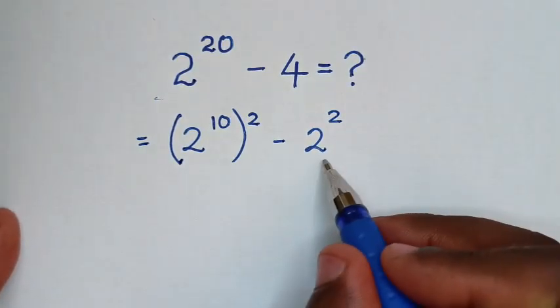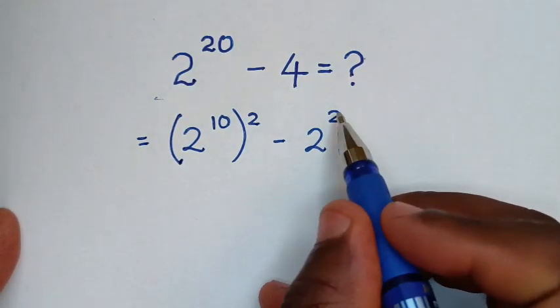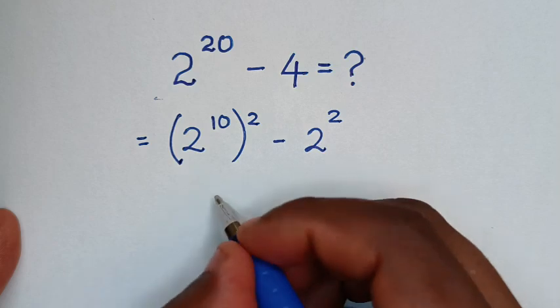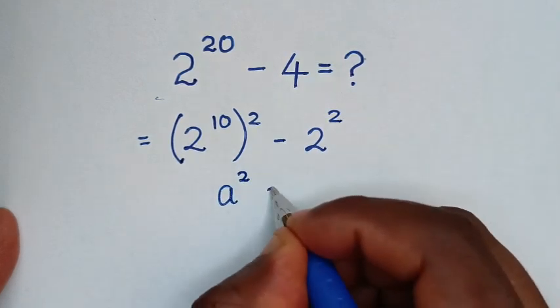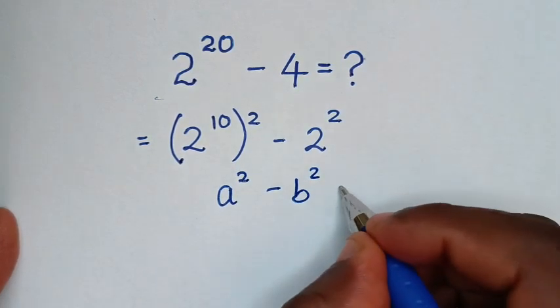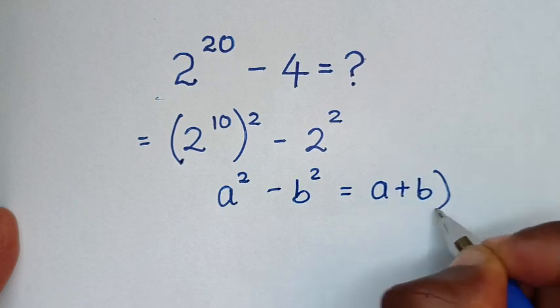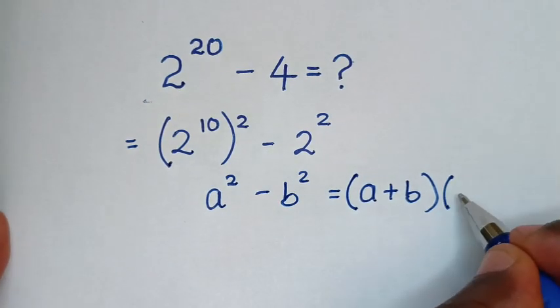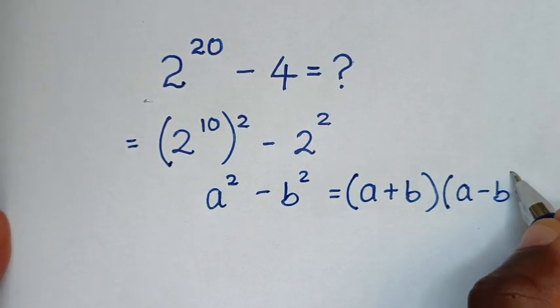Now from here it is now the form of difference of two squares. So I will apply the rule which is a squared minus b squared is equal to a plus b times a minus b.